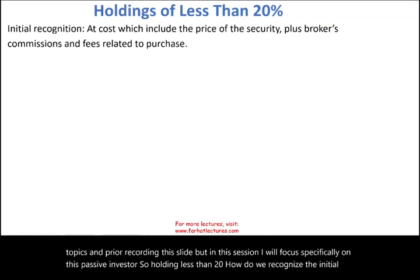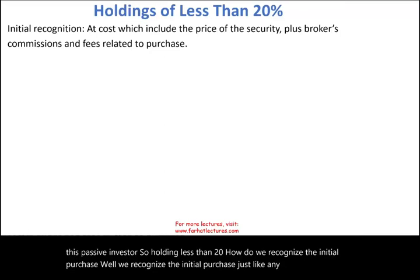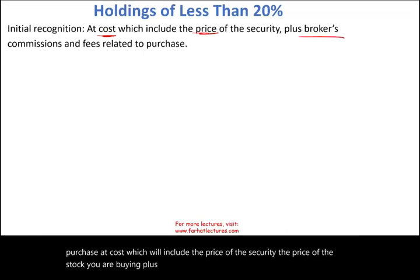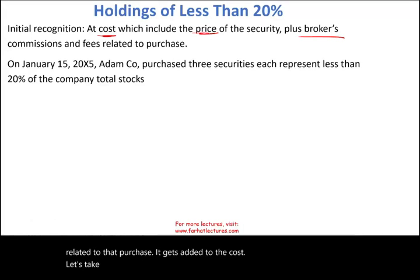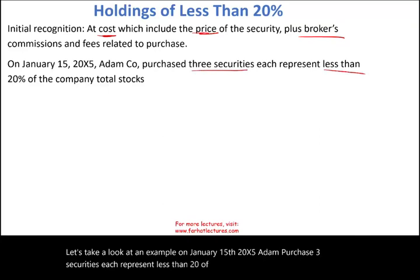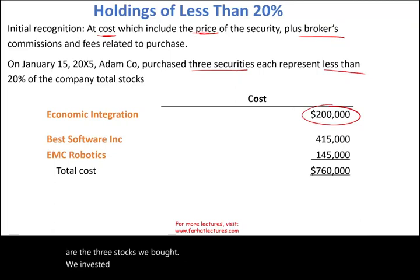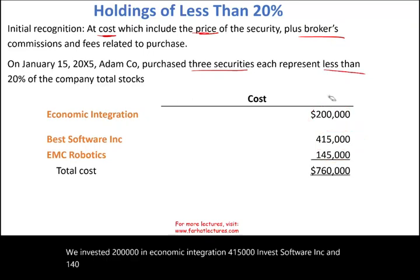We recognize the initial purchase just like any other asset purchase — at cost — which includes the price of the security, the price of the stock you are buying, plus any brokerage commissions and fees related to that purchase, which get added to the cost. Let's take a look at an example. On January 15th, 20X5, Adam purchased three securities, each representing less than 20 percent of the company's total stocks.